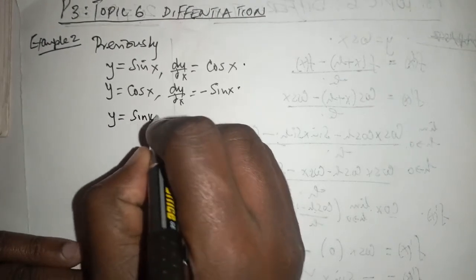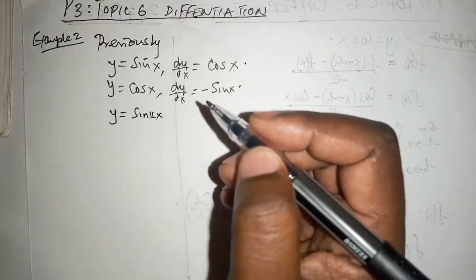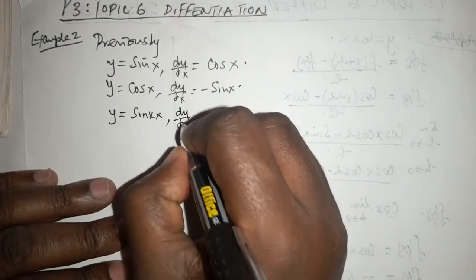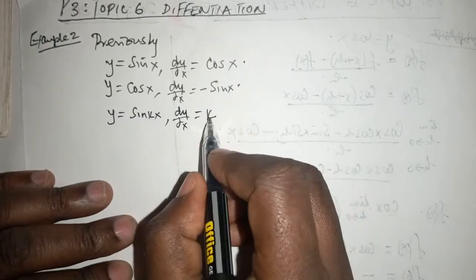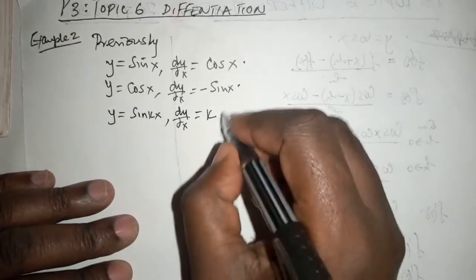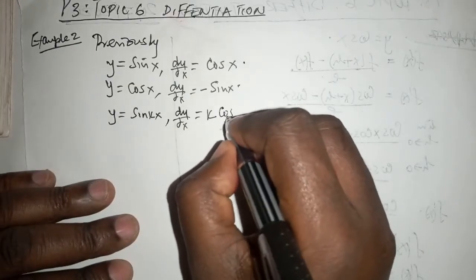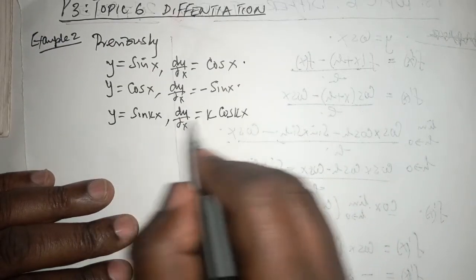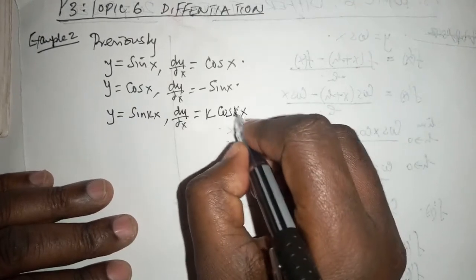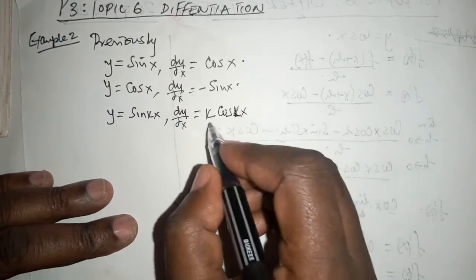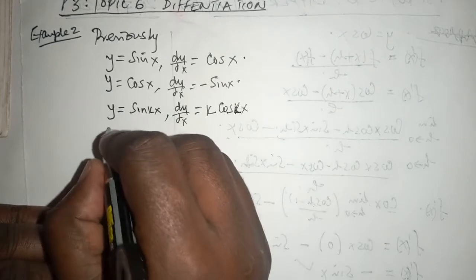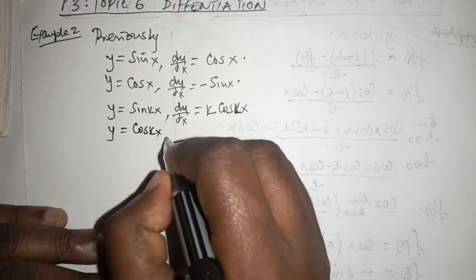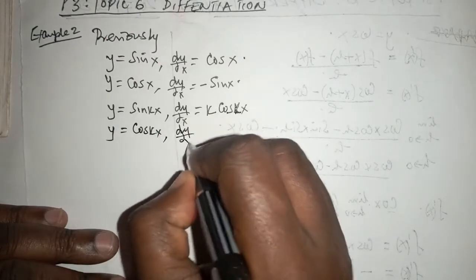The sine of Kx, where K is a constant before the cosine of Kx, because the differential of sine anything is cosine whatever it is. So we have K cosine Kx. And if y was cosine Kx, then it follows that dy/dx is equals to minus K sine Kx.